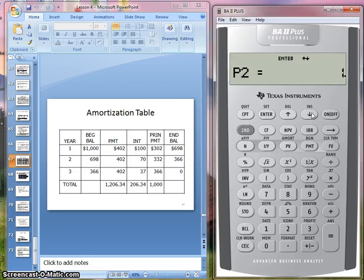We'll keep going and see the remaining balance of about $698—that's the ending balance after one year or one payment. The principal payment is $302 and the interest is $100. Together that makes the total payment of $402, which brings down the balance to $698 after one payment.